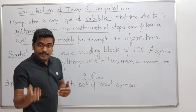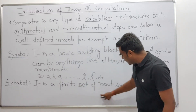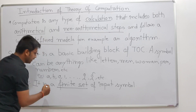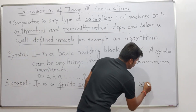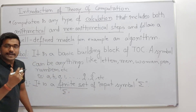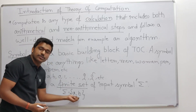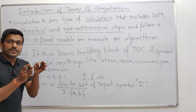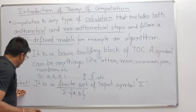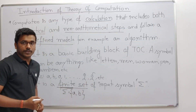Now, since you can consider anything as a symbol, we need to restrict it by defining another term: alphabet. What is an alphabet? It is a finite set of input symbols. It is represented by sigma (Σ). So, alphabet — sometimes also called input alphabet — is always a finite set of input symbols, denoted by sigma.